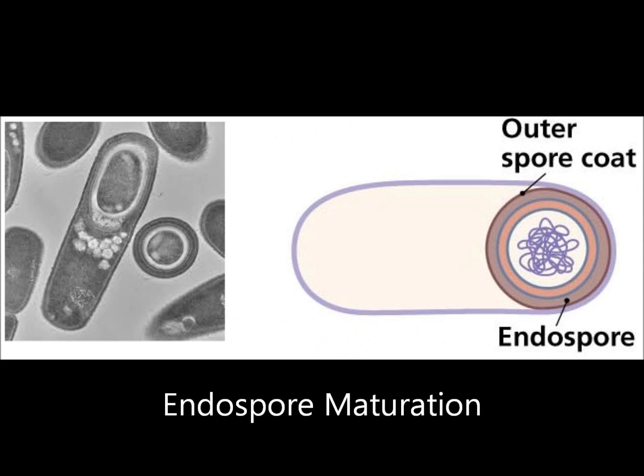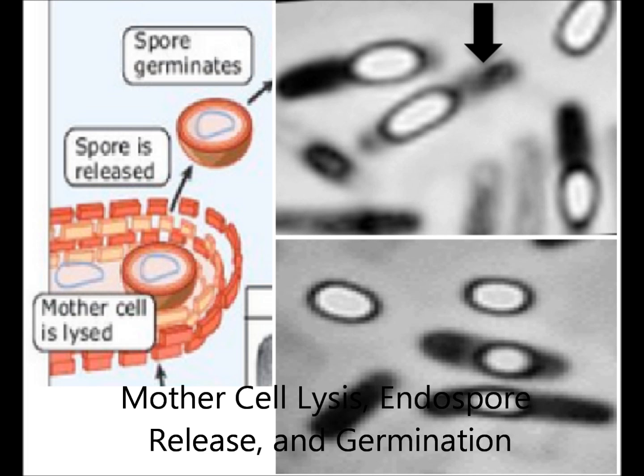A cortex of calcium and dipicolinic acid is deposited between the membranes, and the spore coat forms around the endospore. The endospore then matures and becomes more resistant to heat and chemicals by an unknown process.